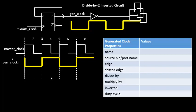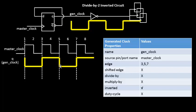To represent this inverted waveform, you can use a divided-by-2 option along with an inverted option, or you can avoid the divide-by option entirely and use edges: 3, 5, 7. This means the first rising edge of gen_clock arrives at the third master clock edge, the falling edge at the fifth, and the next rising edge at the seventh. The inverted relationship is captured using the inverted option in the constraint.